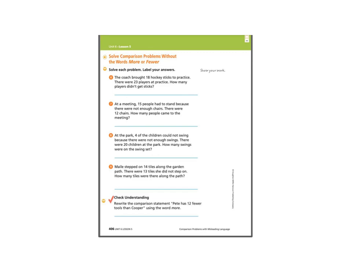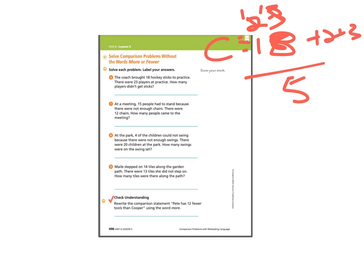The coach brought 18 hockey sticks to practice. So C is coach, 18 hockey sticks or brought 18 to practice. There were 23 players at practice. How many players didn't get sticks? So if there's 18 sticks, there's 23 players, that would be a subtraction problem. If you count it up, it'd be a plus 2 plus 3. If it's a subtraction, you would just get 5 players.